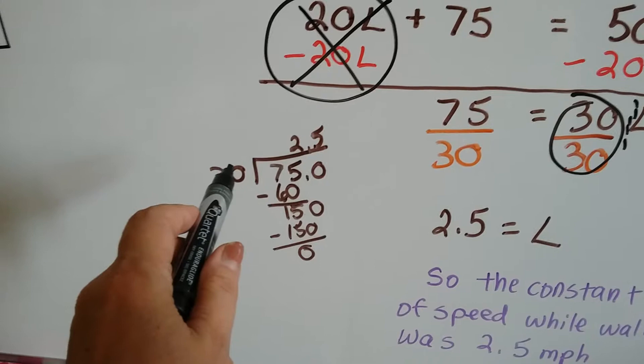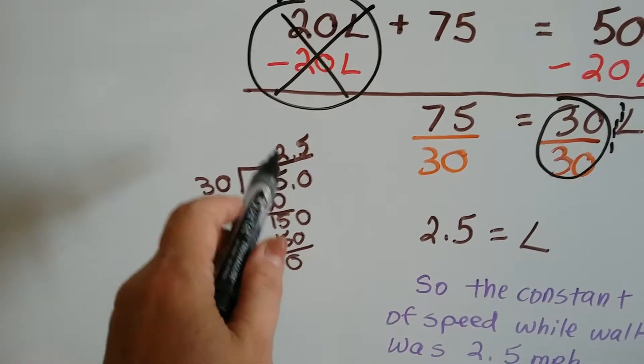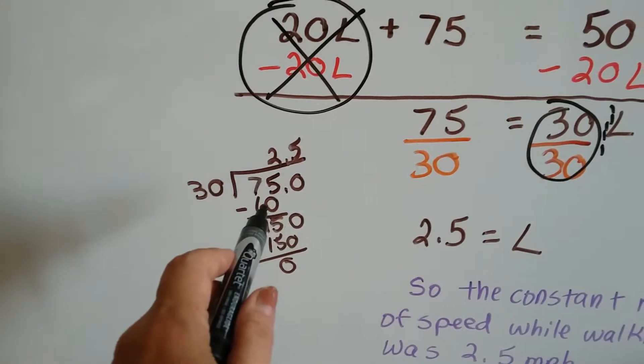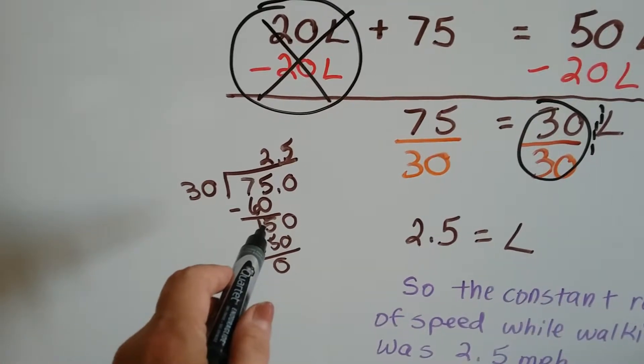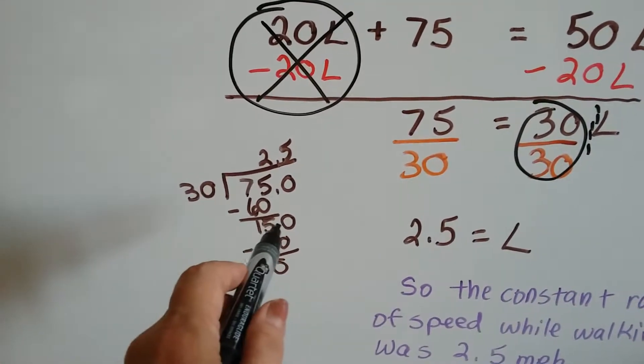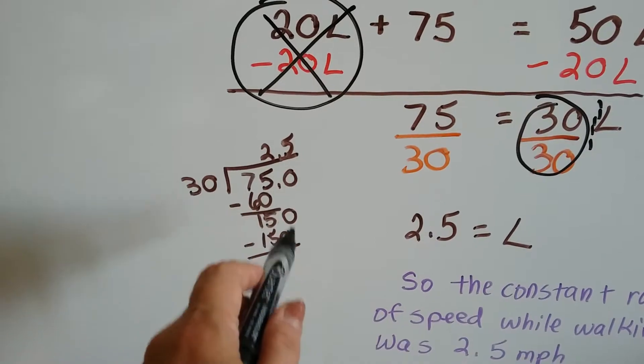And 75 divided by 30. I did 75 divided by 30, and 30 goes into 75 two times, so I put the 2 up there. That's 60. Then I did my subtraction and got 15, and 30 can't go into 15, so I added a decimal point and another zero.